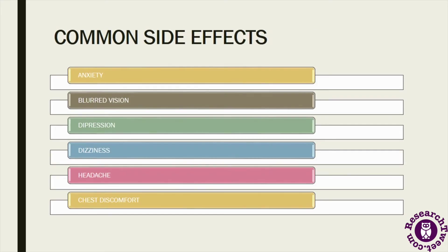The second category of side effects caused by metformin are common side effects, which are found less frequently than the very common ones. These include anxiety, blood pressure changes, depression, dizziness, headache, and chest discomfort. Other common side effects include joint pain, rashes, stuffy or runny nose, swollen joints, and abnormal stools.